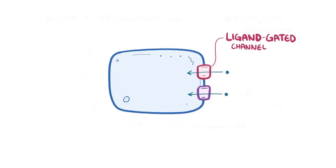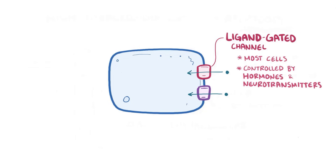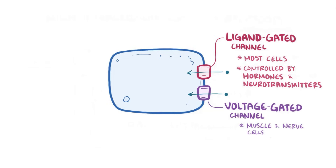Calcium gets into the cell through two types of channels, or cell doors, within the cell membrane. The first type are ligand-gated channels, which are what most cells use to let calcium in, and are primarily controlled by hormones or neurotransmitters. The second type are voltage-gated channels, which are mostly found in muscle and nerve cells and are primarily controlled by changes in the electrical membrane potential.